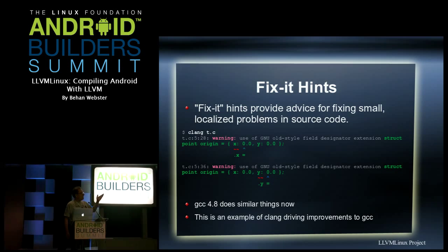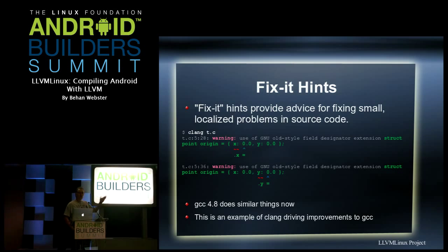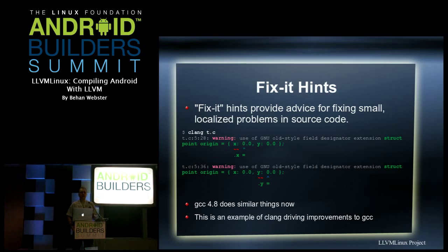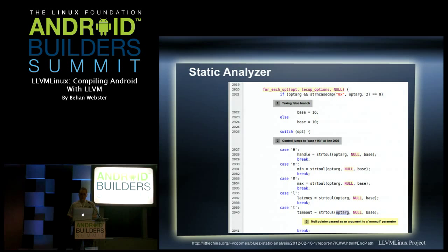Clang used to be unique in having better error messages — messages that told you exactly what the problem was and usually how to fix it, called 'fix-it hints,' with color syntax highlighting. The reality is that the latest versions of GCC have caught up; they do very similar things now. GCC 4.8 is almost entirely caught up, and in some cases does a better job on certain errors. Competition between the two toolchains has led to a situation where both are getting better, which is pretty exciting.